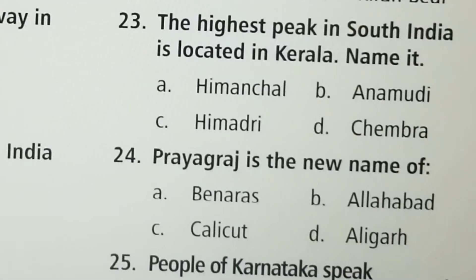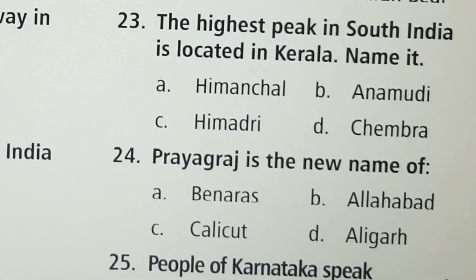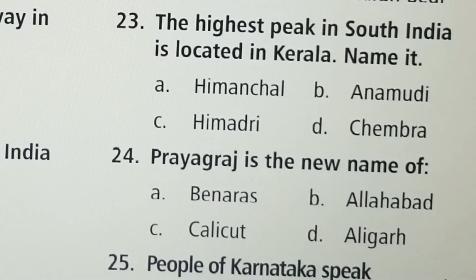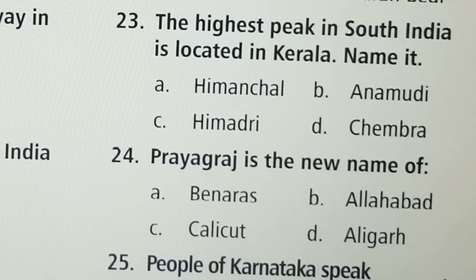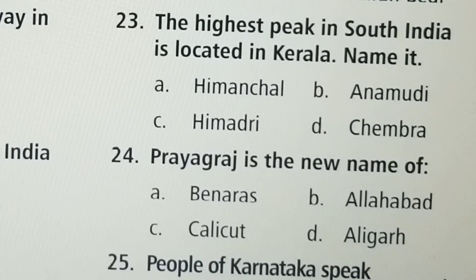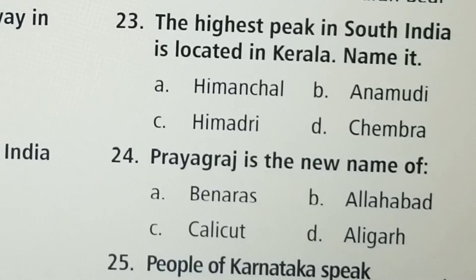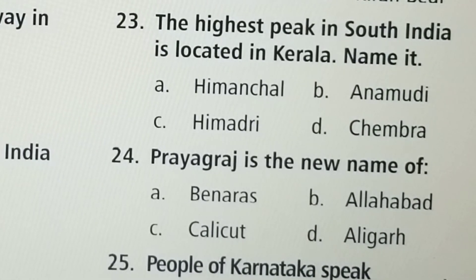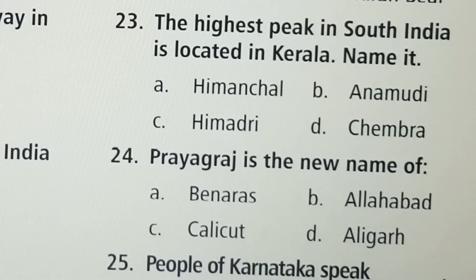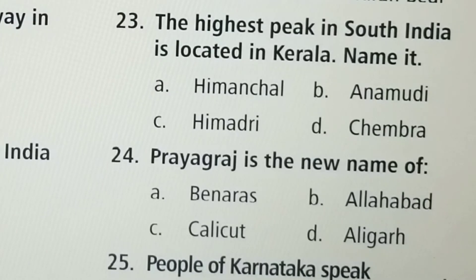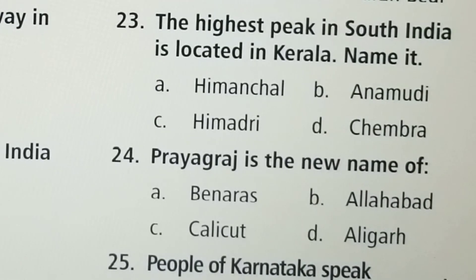Next question: The highest peak in South India is located in Kerala. Name it. Option A: Himachal, Option B: Anamudi, Option C: Himadri, Option D: Chambra. Option B, Anamudi, is the correct answer.